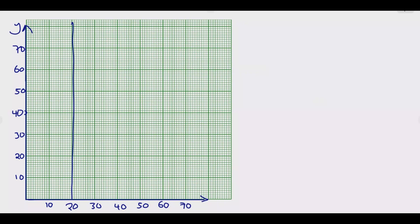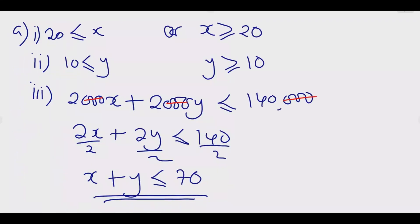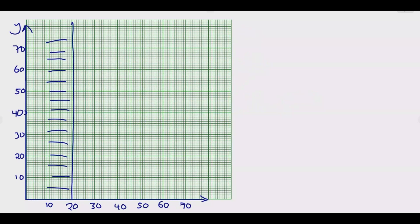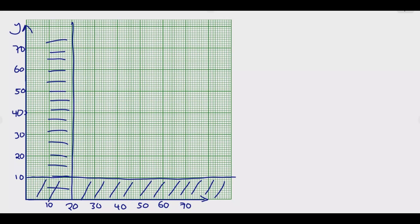For X ≥ 20, the region to the left of the line (where X < 20) is the unwanted region, so we shade that. For the second inequality, Y ≥ 10, we go to the Y-axis, find 10, and draw a horizontal line there. The region below that line is unwanted since Y must be at least 10, so we shade below it.